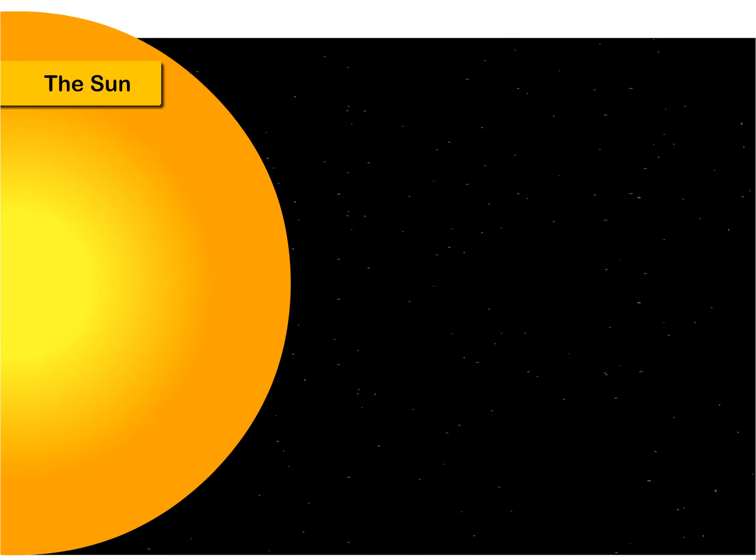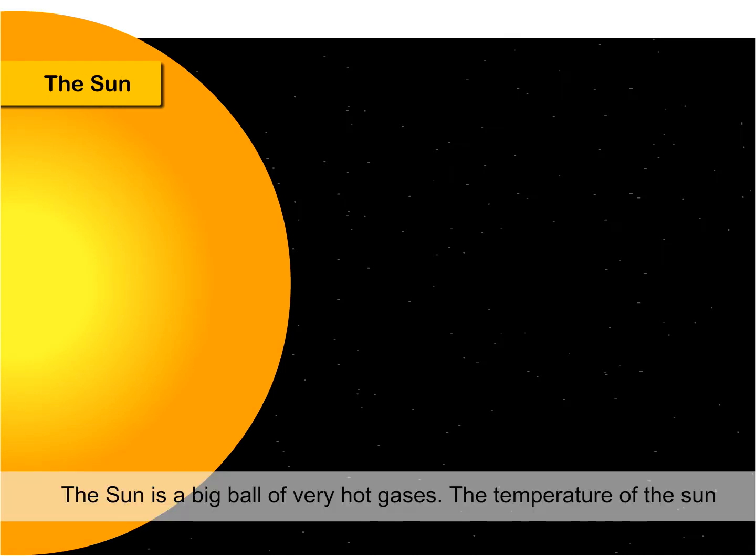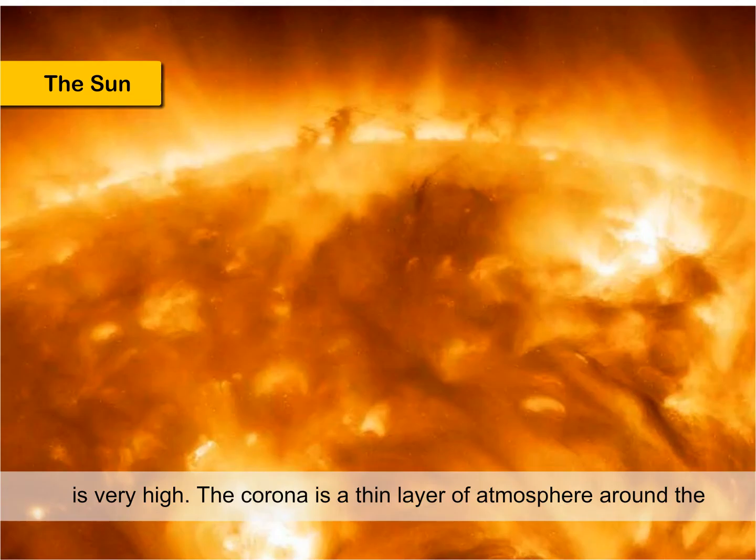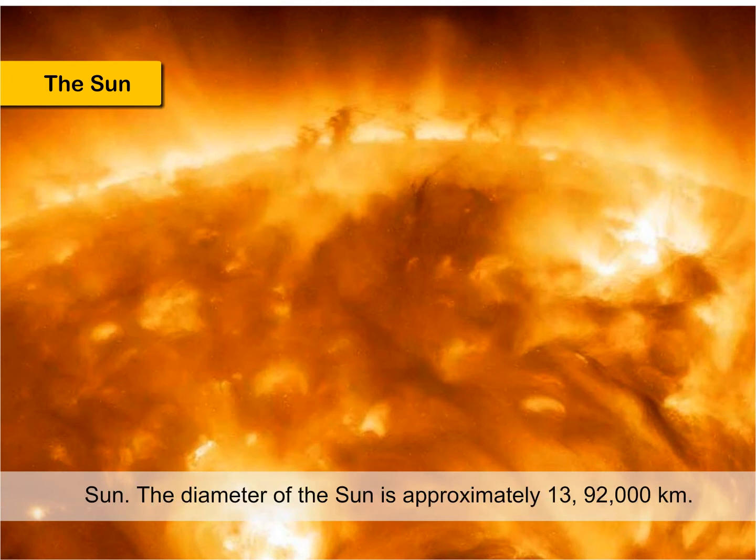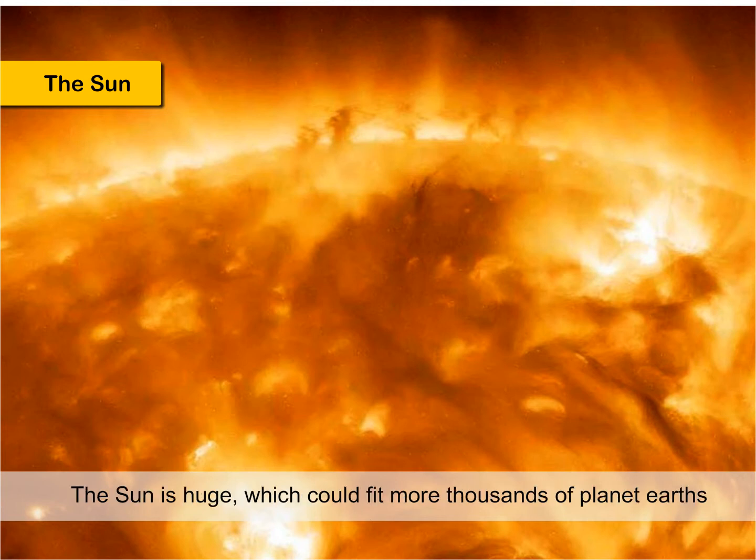The Sun. The sun is a big ball of very hot gases. The temperature of the sun is very high. The corona is a thin layer of atmosphere around the sun. The diameter of the sun is approximately 1,392,000 km. The sun is huge, which could fit more than thousands of planet Earths inside it. It appears small because it is far from us.